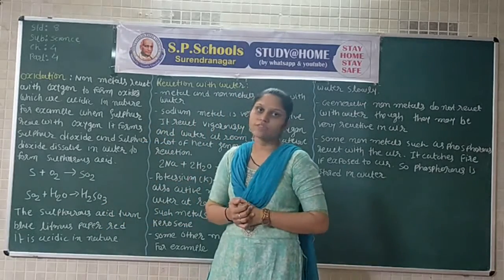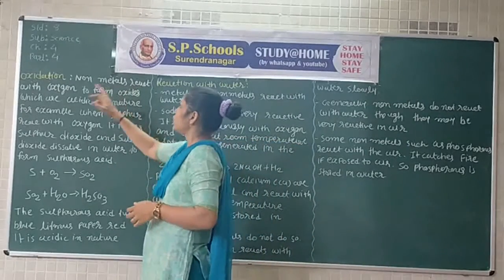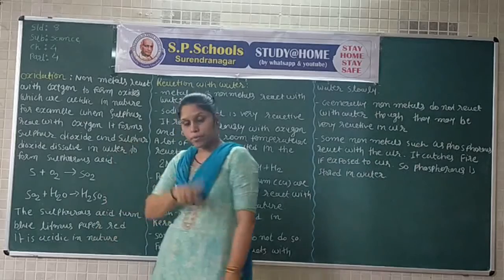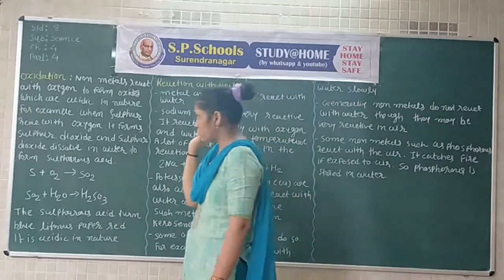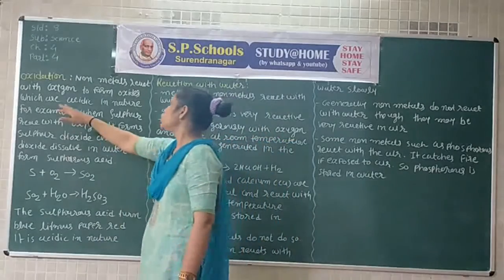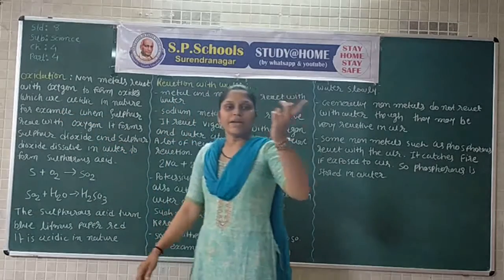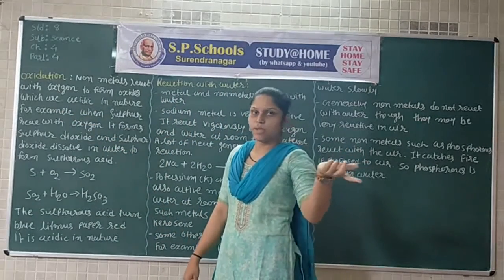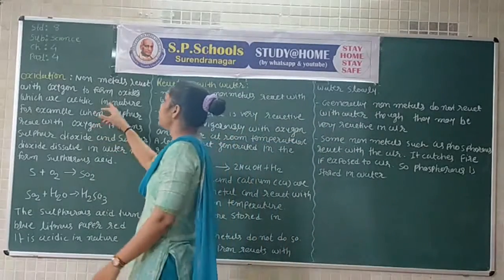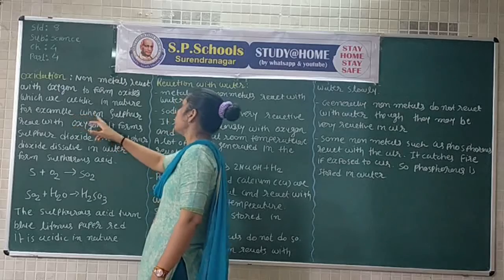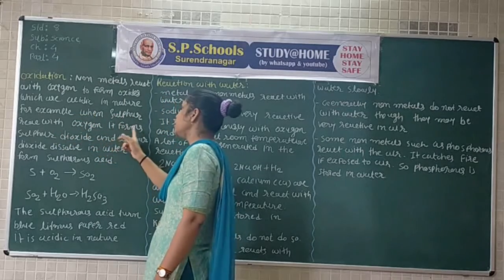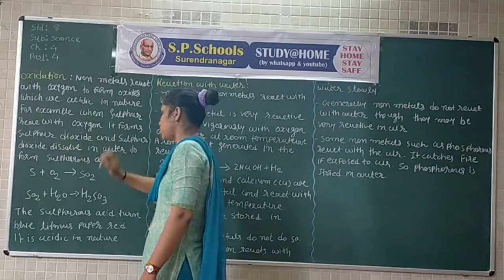Level of oxidation: non-metals react with oxygen to form oxides. Non-metals form oxides which are acidic in nature. Metals form oxides which are basic in nature, while non-metals form oxides which are acid in nature.